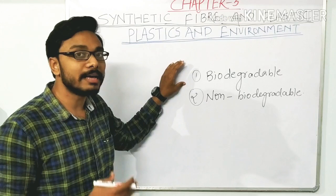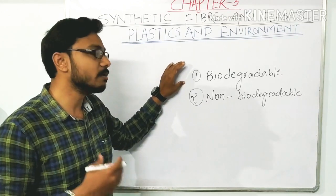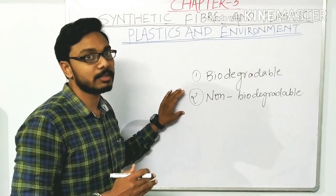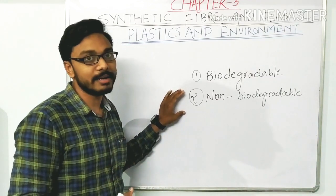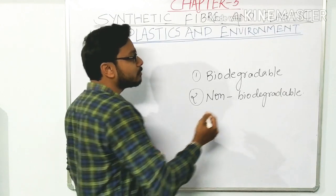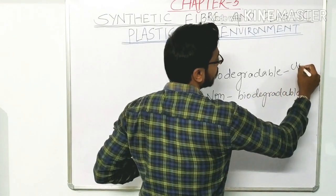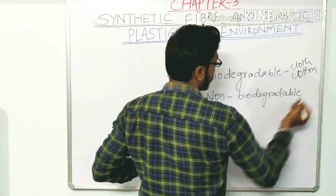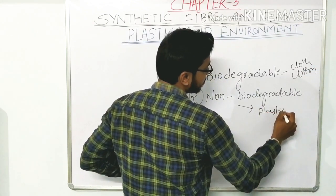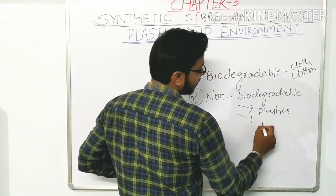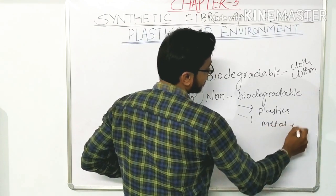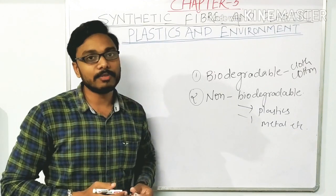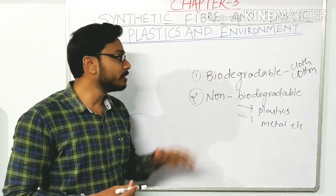But if we throw plastic or any type of metal in soil or water, it cannot be decomposed even after a very long time. Materials which can be decomposed by natural phenomena are called biodegradable; materials which cannot be decomposed by natural substances are known as non-biodegradable. Examples: biodegradable — cloth, cotton; non-biodegradable — plastics, metals.